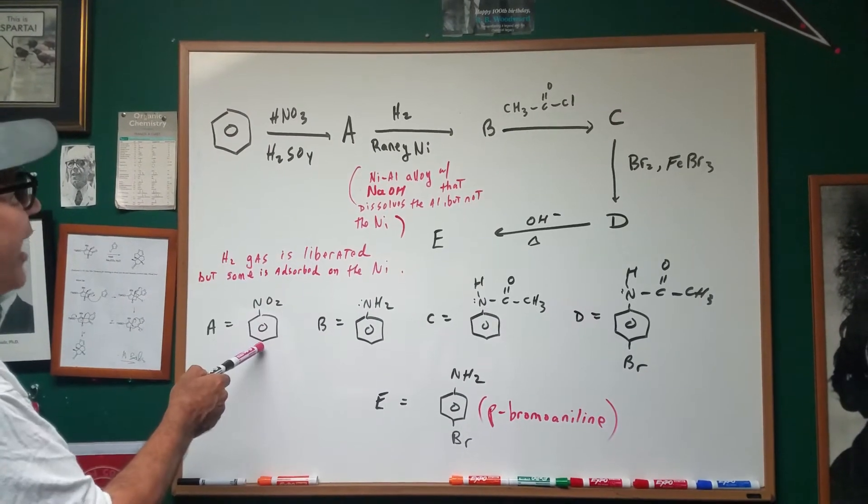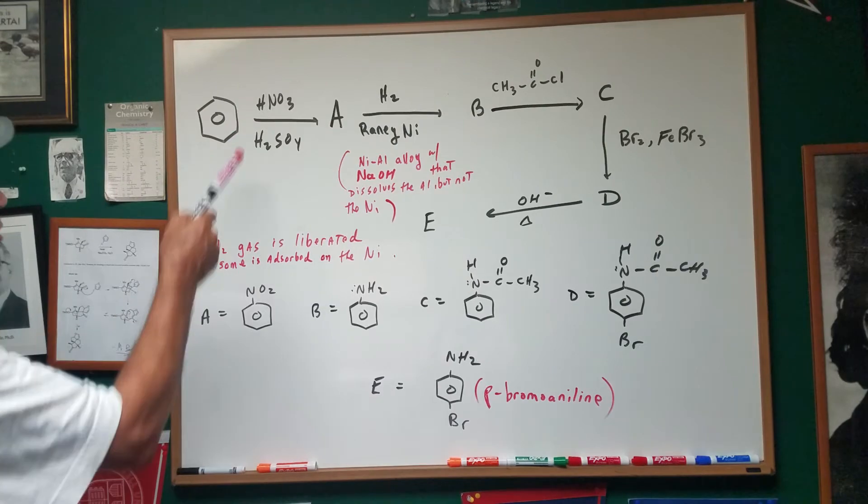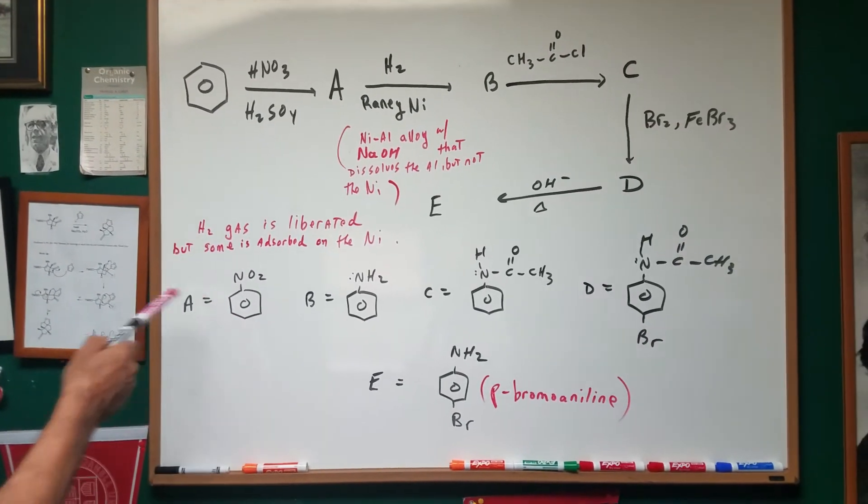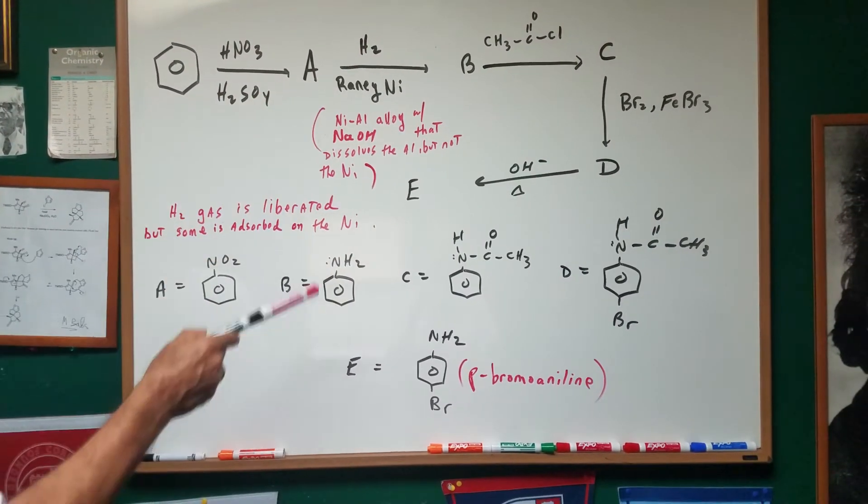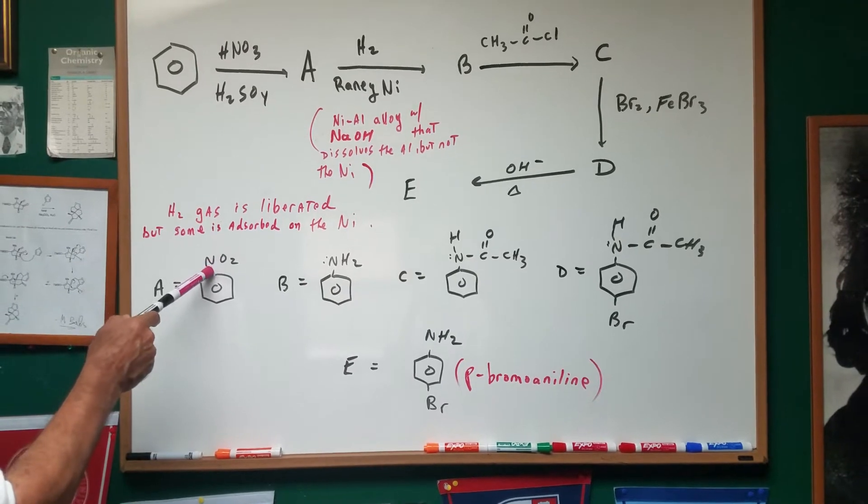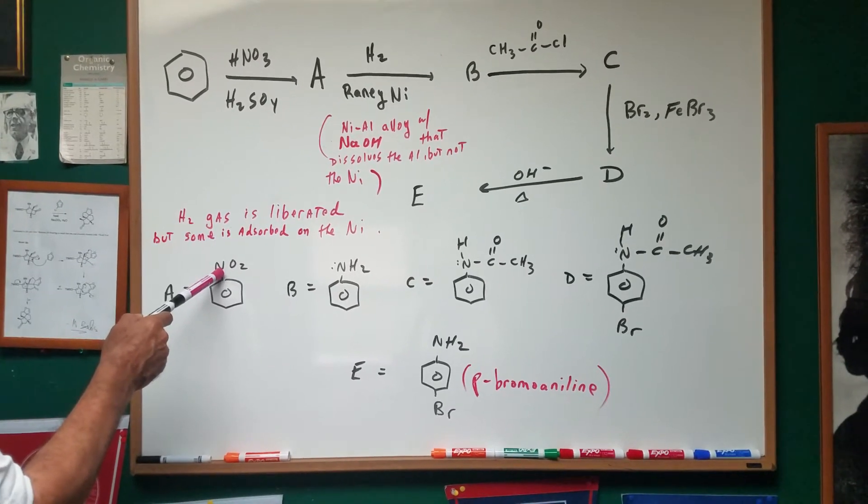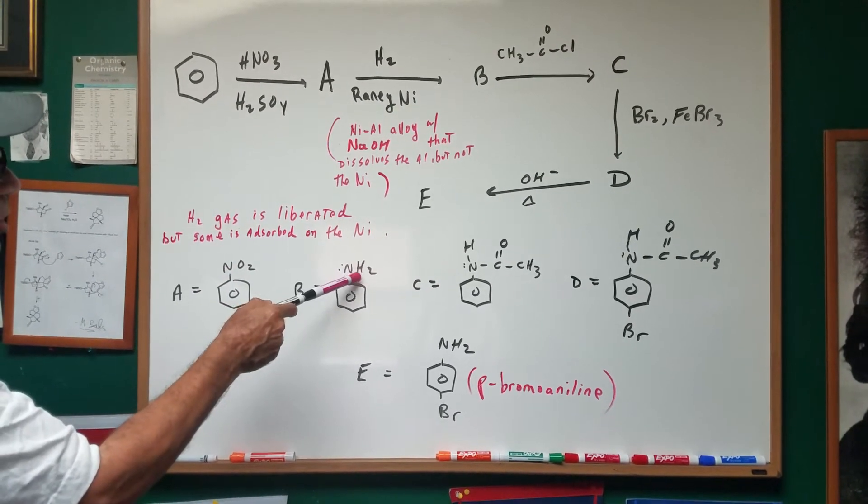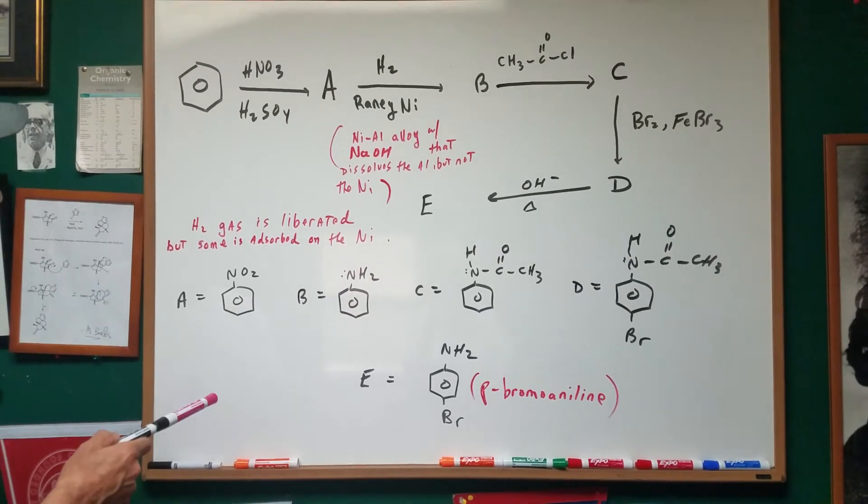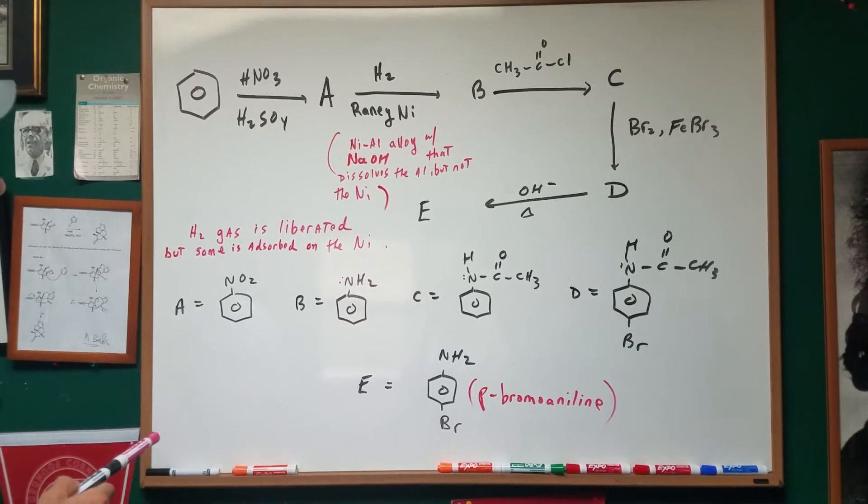What we're first going to do is we nitrate benzene, HNO3 and H2SO4, to get nitrobenzene. Hydrogen in rainy nickel is one of my favorite ways to take a nitro group into an amino group. And we've made aniline.